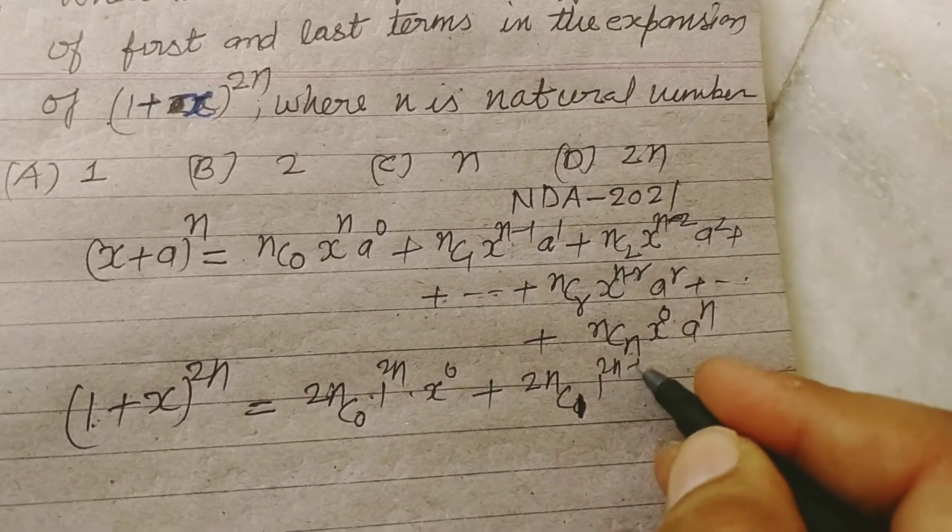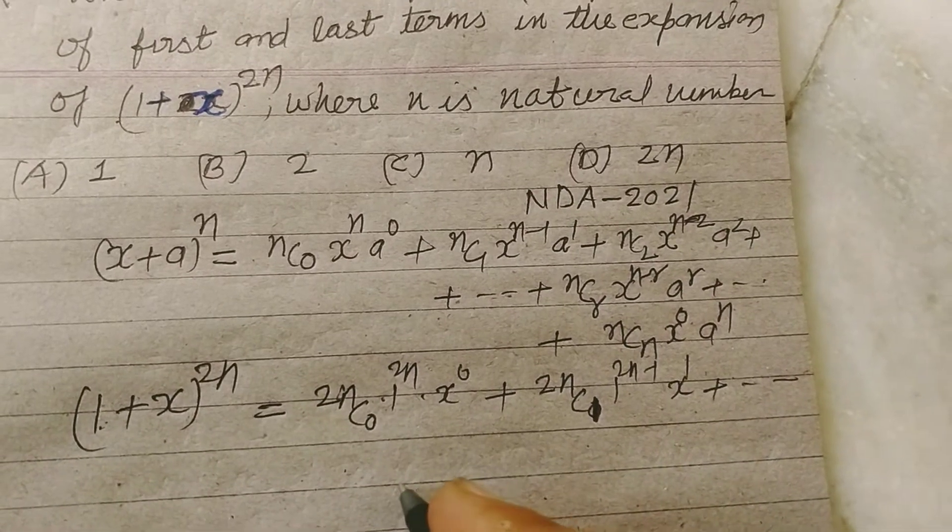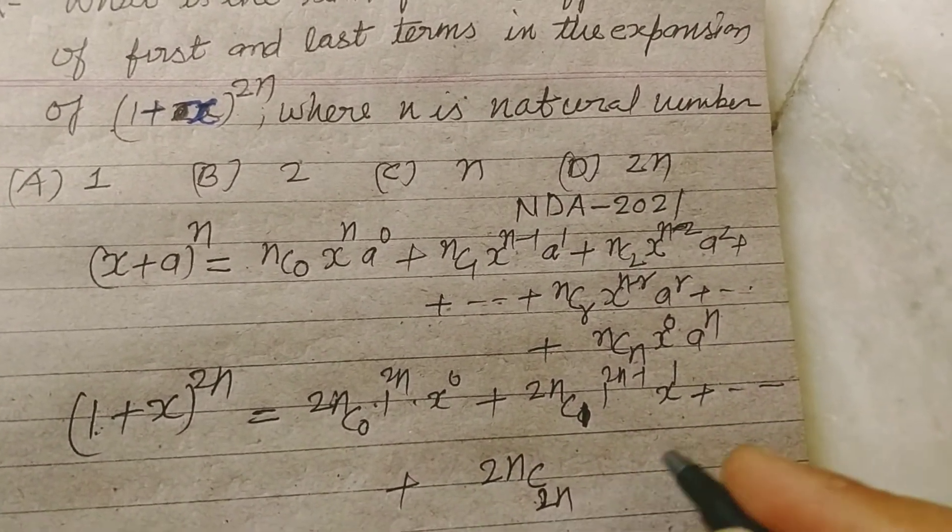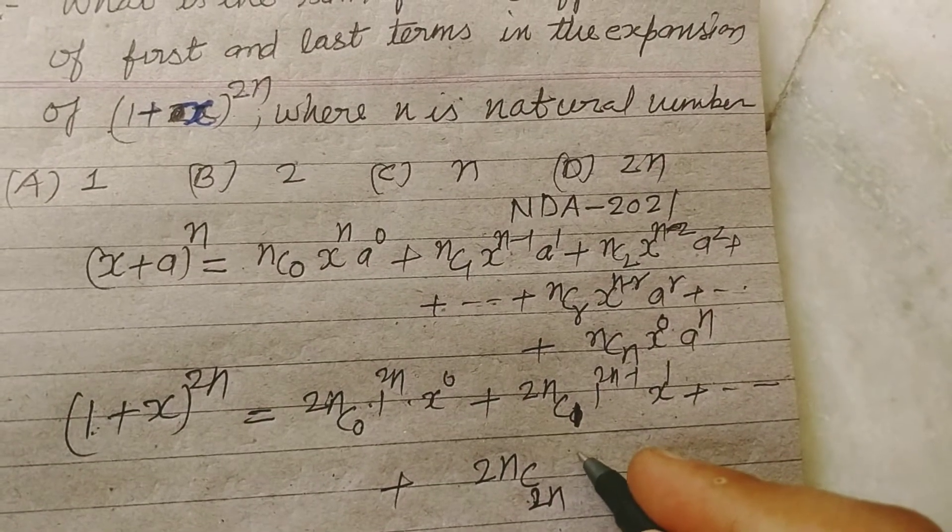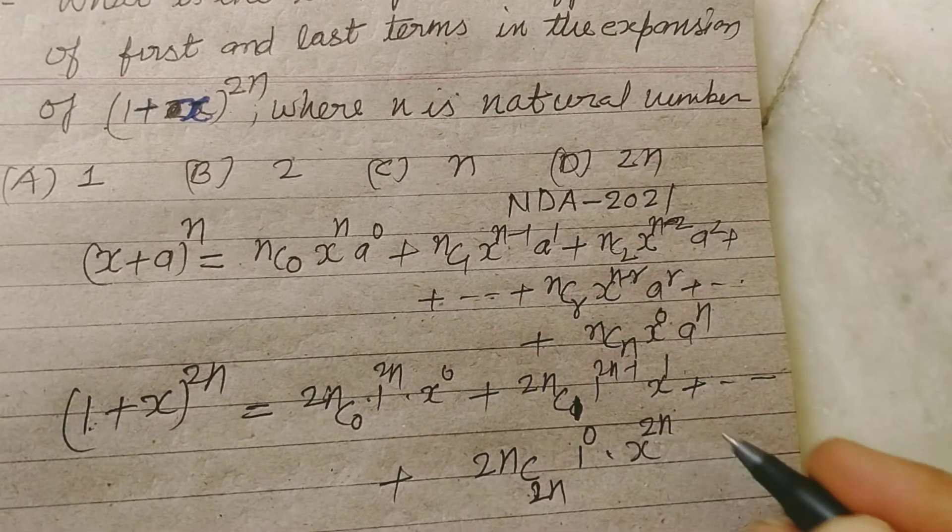1 to the power 2n minus 1, x to the power 1, plus and so on, and the last term is 2nC2n, 1 to the power 0 and x to the power 2n.